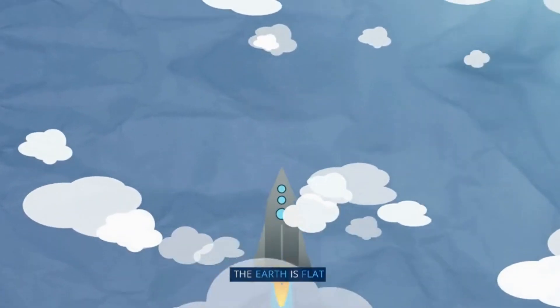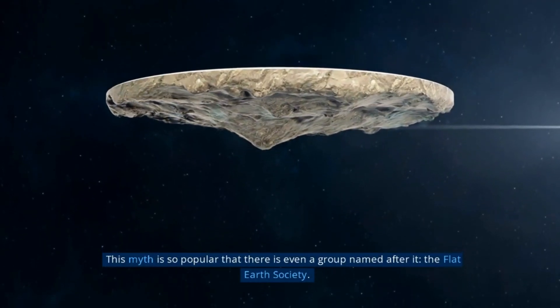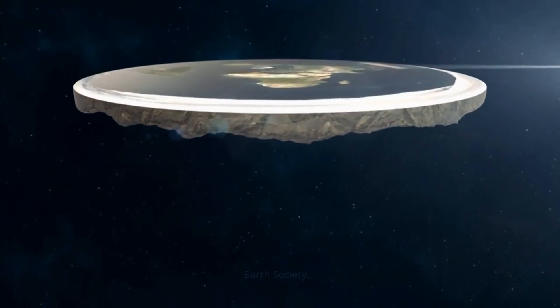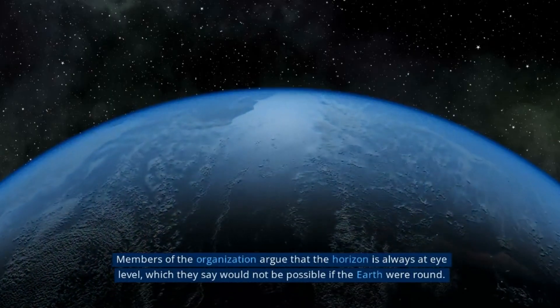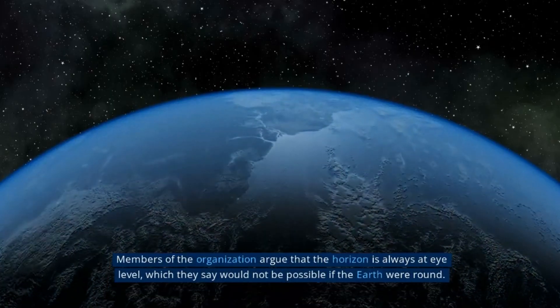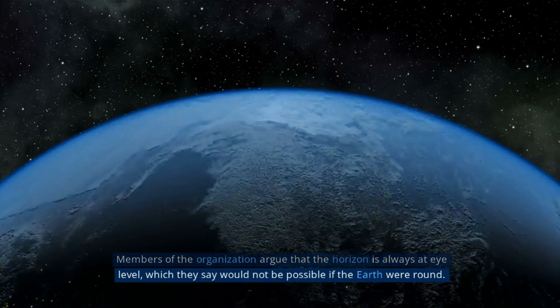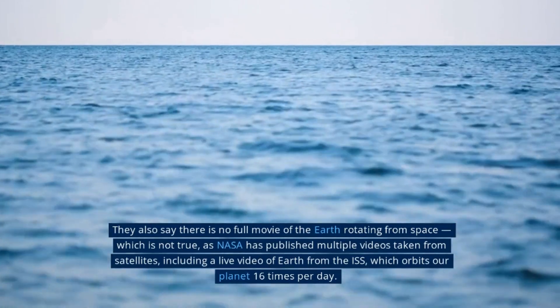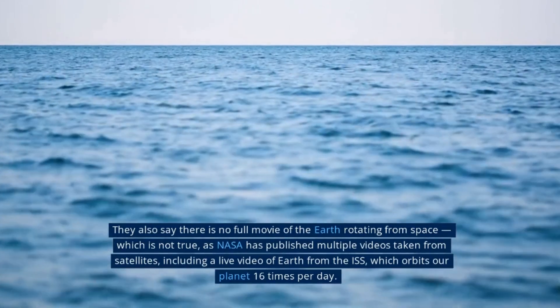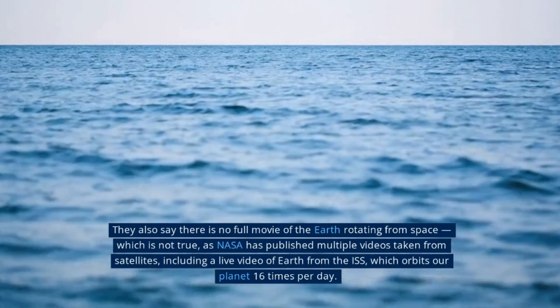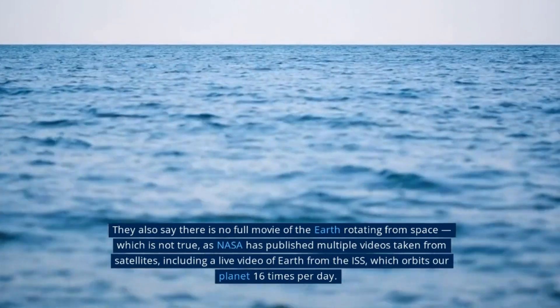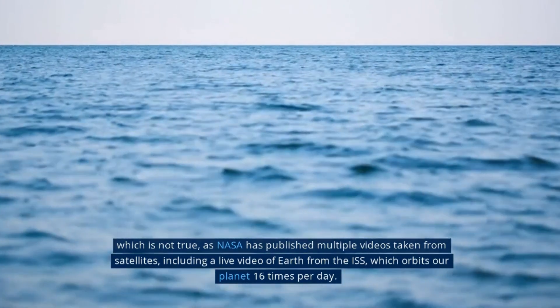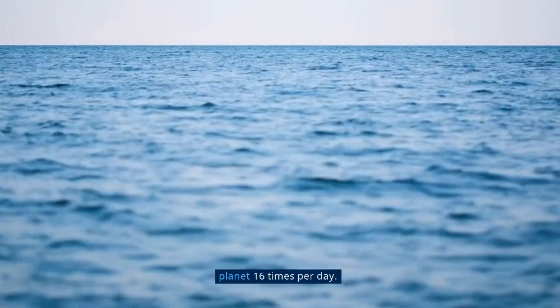The Earth is flat. This myth is so popular that there is even a group named after it, the Flat Earth Society. Members of the organization argue that the horizon is always at eye level, which they say would not be possible if the Earth were round. They also say there is no full movie of the Earth rotating from space, which is not true, as NASA has published multiple videos taken from satellites, including a live video of Earth from the ISS, which orbits our planet 16 times per day.